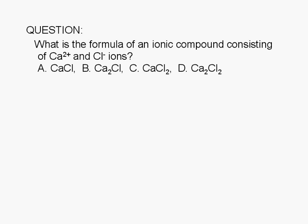What is the formula of an ionic compound consisting of calcium and chloride ions? A. CaCl, B. Ca₂Cl, C. CaCl₂, or D. Ca₂Cl₂.